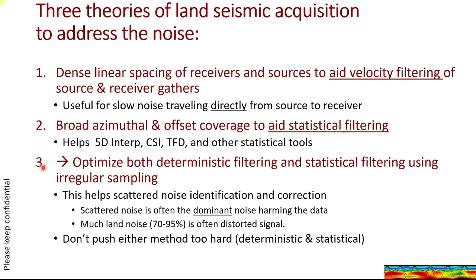Finally, number three: I'm proposing to optimize both deterministic filtering and statistical filtering using irregular sampling. Now we have enough sources and receivers to be able to do that. And there's a big benefit to this because it helps scattered noise identification and correction.